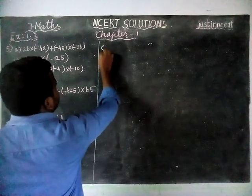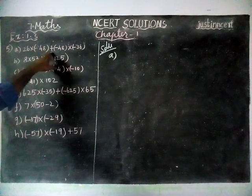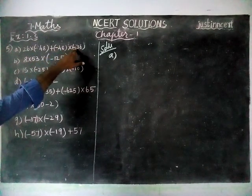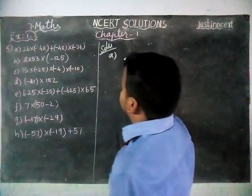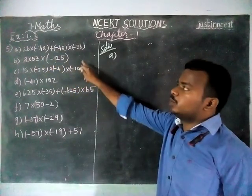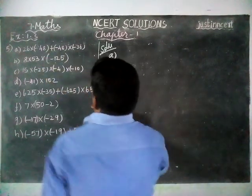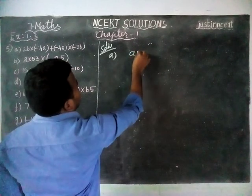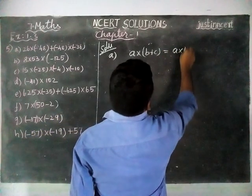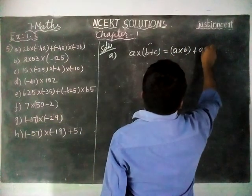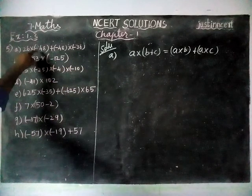In option A, the number given is 26 × (-48) + (-48) × (-36). In this, -48 is common. So we are going to take -48 outside by using the distributive property of multiplication over addition. By using that property, we are going to find the answers. The formula is: A × (B + C) = A × B + A × C.